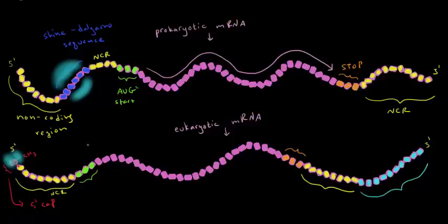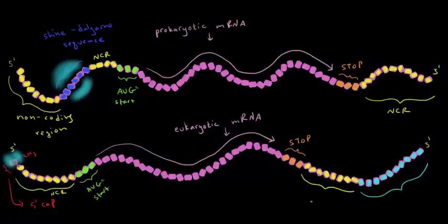And then the ribosome is going to hit the start codon again, AUG. Tells it to start and it's going to start translating. So it's going to translate this entire section until it hits the stop codon. And then we have another non-coding region. And then we hit something that looks different than what we've seen in the prokaryotic mRNA. So this section with blue nucleotides. And that's called the poly-A tail.